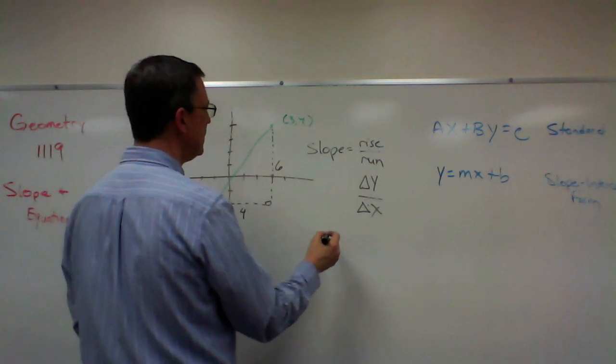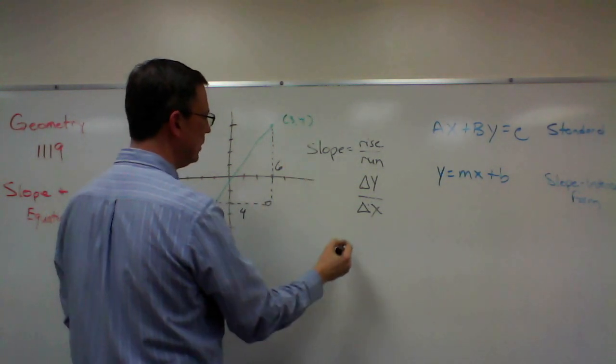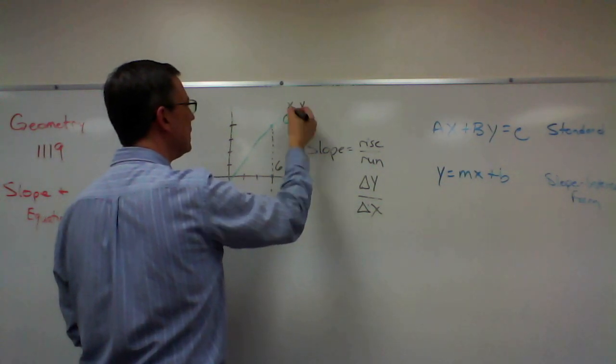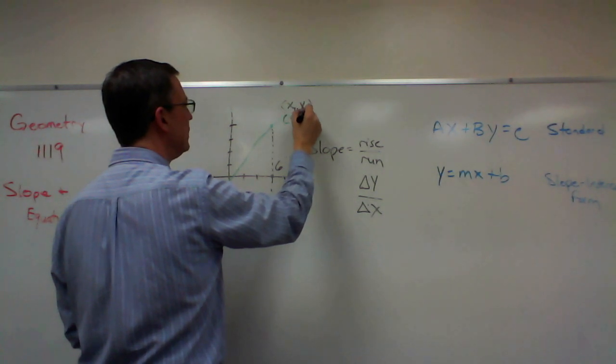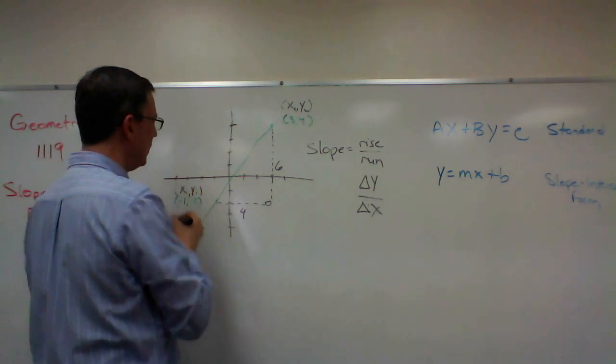So rise is the change on the y-axis. So we call this the change in y, triangle y, delta y. That's actually the Greek letter delta, which means the change in y over the change in x. So the change in y is the same as rise, the change in x is the same as run. Now in order to solve this, we need to have a formula that even goes further and tells me which numbers to plug in. Well, the change in y is the second number here, because remember, in any point we have x and then y. I'm going to call this the second point x2, y2. I'm going to call this one x1, y1.